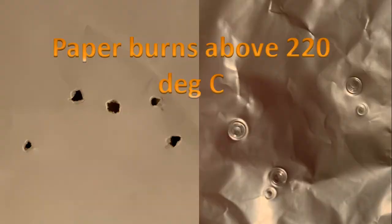So now, let's compare the paper to aluminum foil. If we look very carefully at the paper, on the edge of the holes, you'll notice slight burn marks.